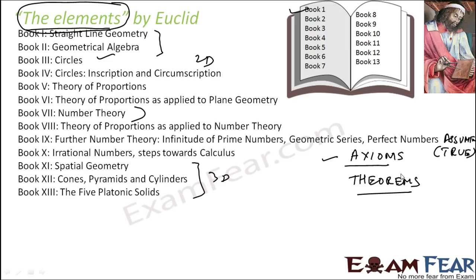Please note that not all of these axioms and theorems are Euclid's own creation. A good number of them were stated by earlier mathematicians like Thales and Pythagoras. But Euclid was the first to show how these propositions could fit into a comprehensive, deductive, and logical system. He compiled the existing data in a very well-organized way so that people could logically deduce conclusions.